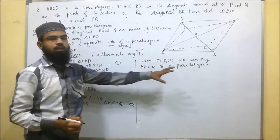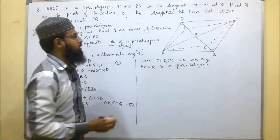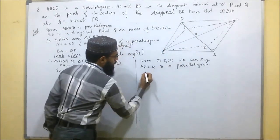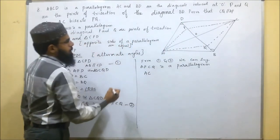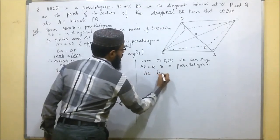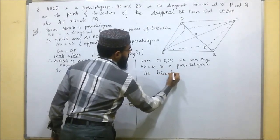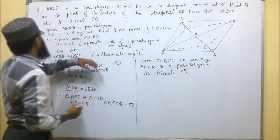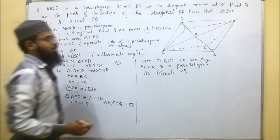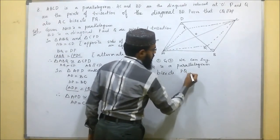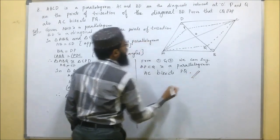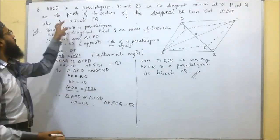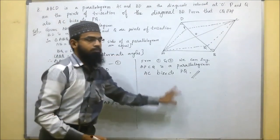Since APCQ is a parallelogram, its diagonals bisect each other. AC and PQ are diagonals of parallelogram APCQ, so AC bisects PQ — because diagonals bisect each other in a parallelogram. Thus both results are proved: CQ is parallel to AP, and AC bisects PQ.